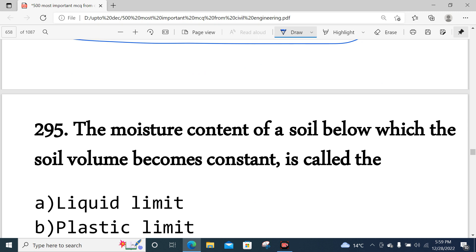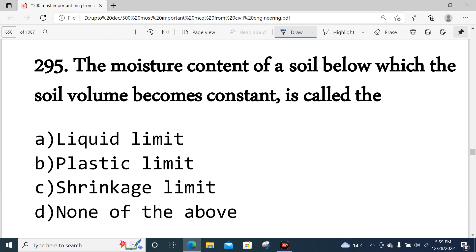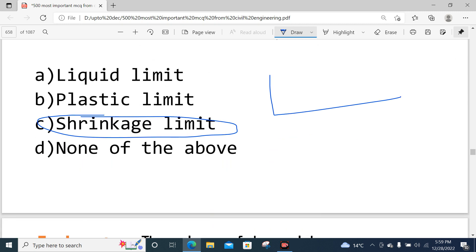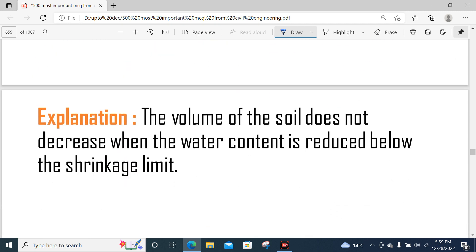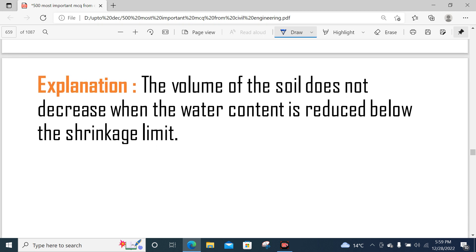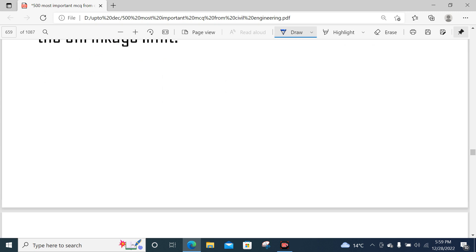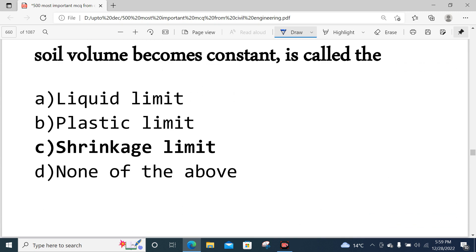Question number 295: The moisture content of the soil below which the soil volume becomes constant is the shrinkage limit. When water content is reduced below the shrinkage limit, volume becomes constant.